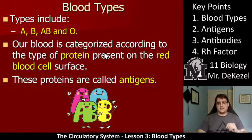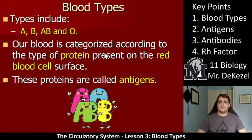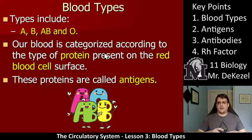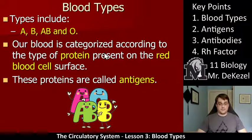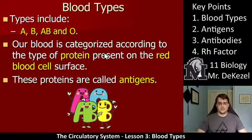What determines that particular blood type is the protein that is present on the red blood cell surface. These red blood cells — you know what they look like, they are little red discs — they have proteins present on the outside of them. These proteins are called antigens. Blood types are A, B, AB, and O, and what determines this are the antigens or the proteins on the surface of those blood cells.